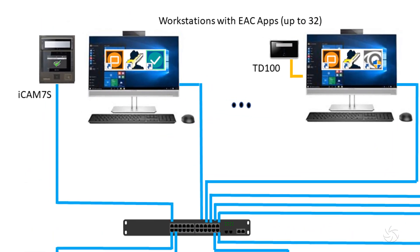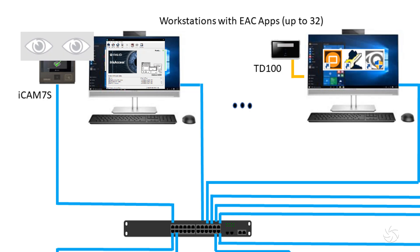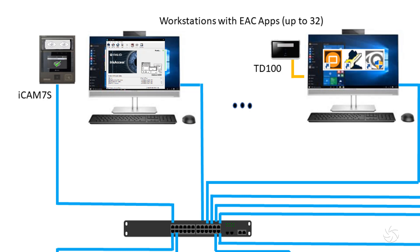Using the iris enroll application and the enrollment iCam, a series of digital images of the user's irises are captured. The best images from this series of captures are determined by the software, and then these are used for the creation of a 512-byte iris biometric template for each eye.